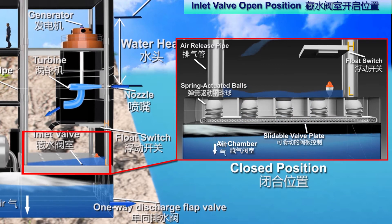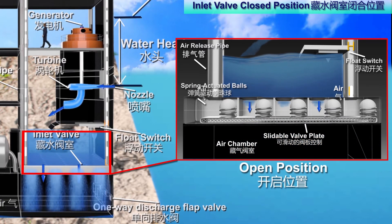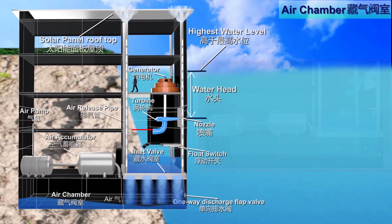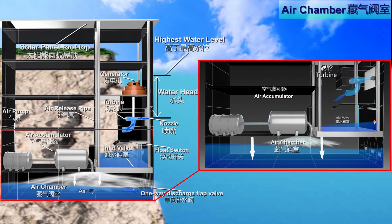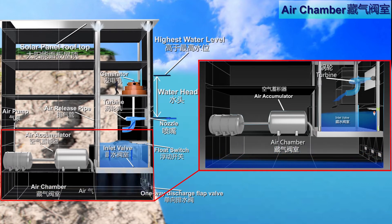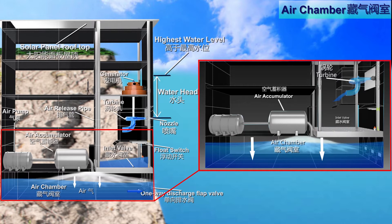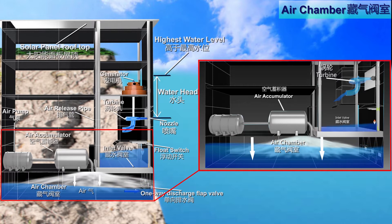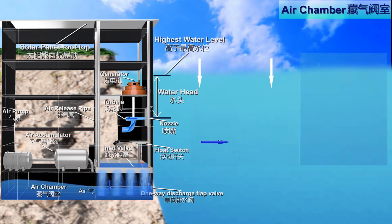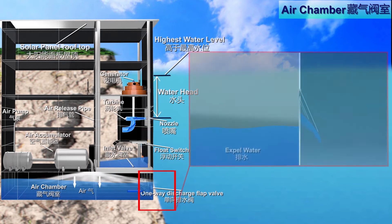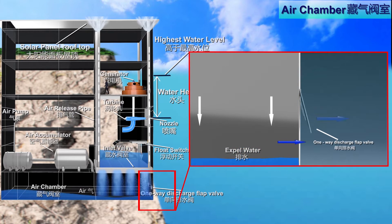The float switch triggers the control valves to retract the spring actuated balls to their open position, allowing water to flow into the air chamber. After a periodic time interval, the spring actuated balls are moved back into the closed position. An air displacement control valve is used to periodically control compressed air supply into the air chamber, and to periodically displace water from the air chamber through a plurality of one-way discharge flap valves, through which water is discharged out while any water tending to flow back in would close the flap valve.